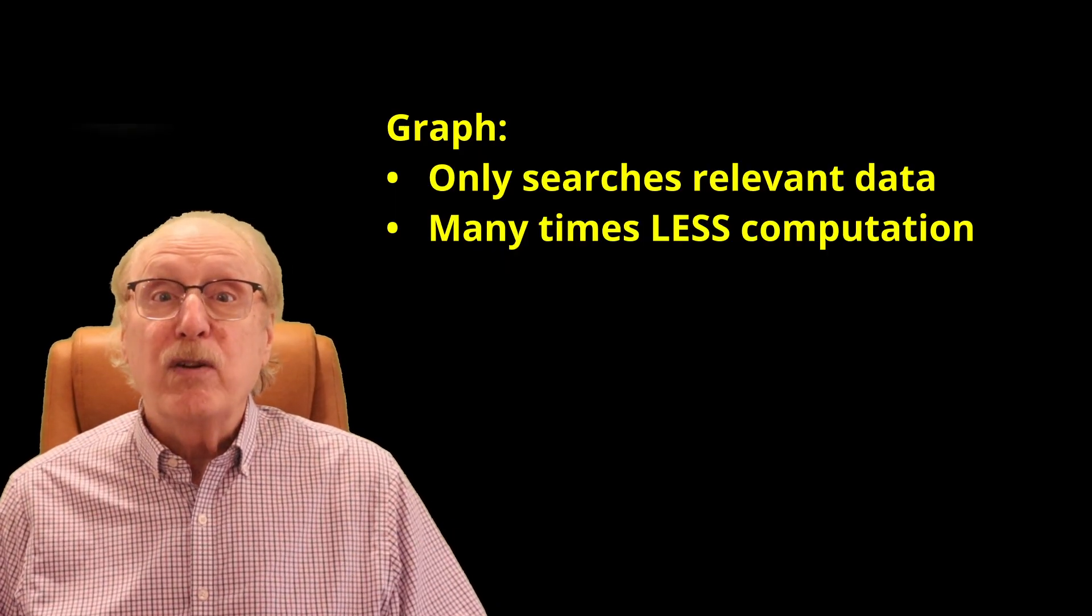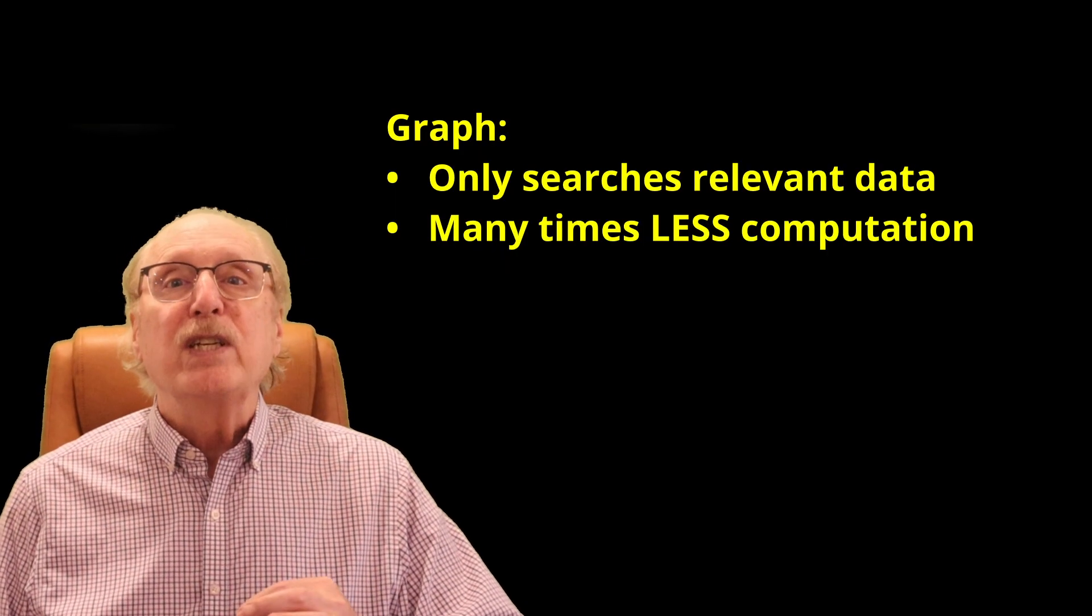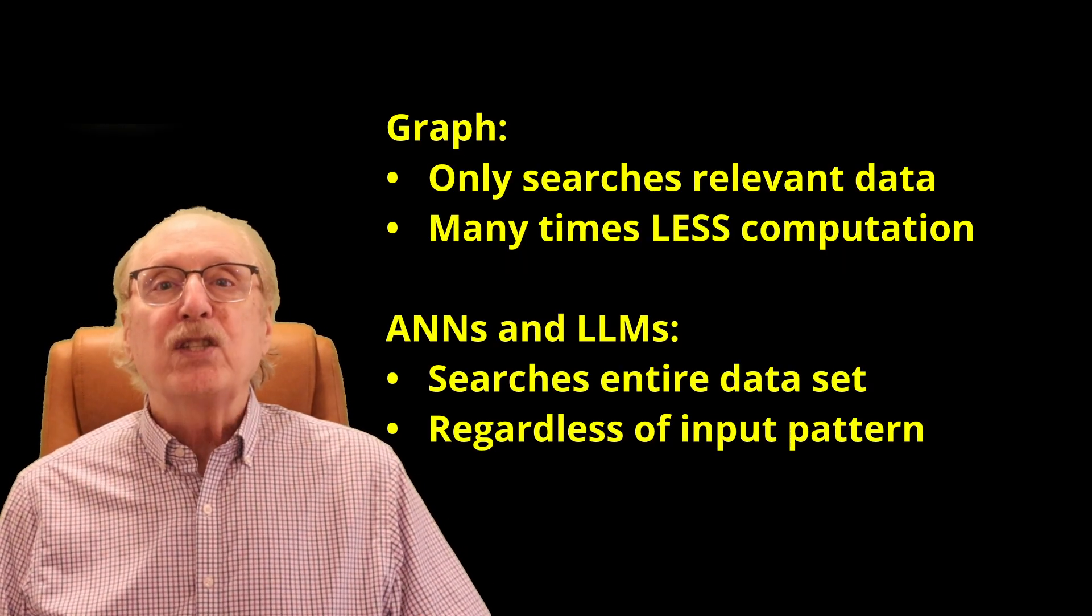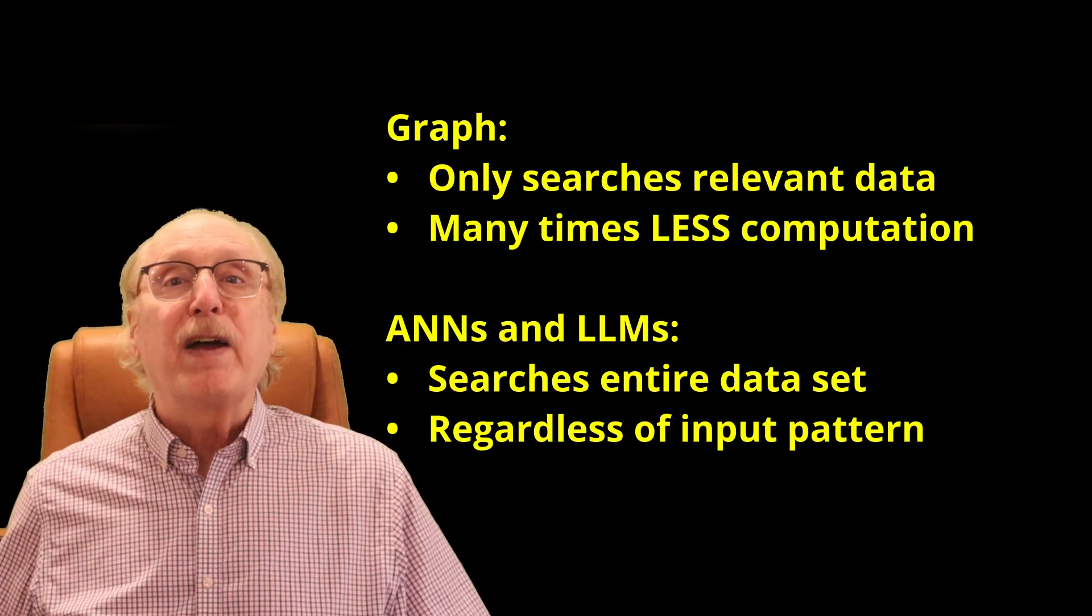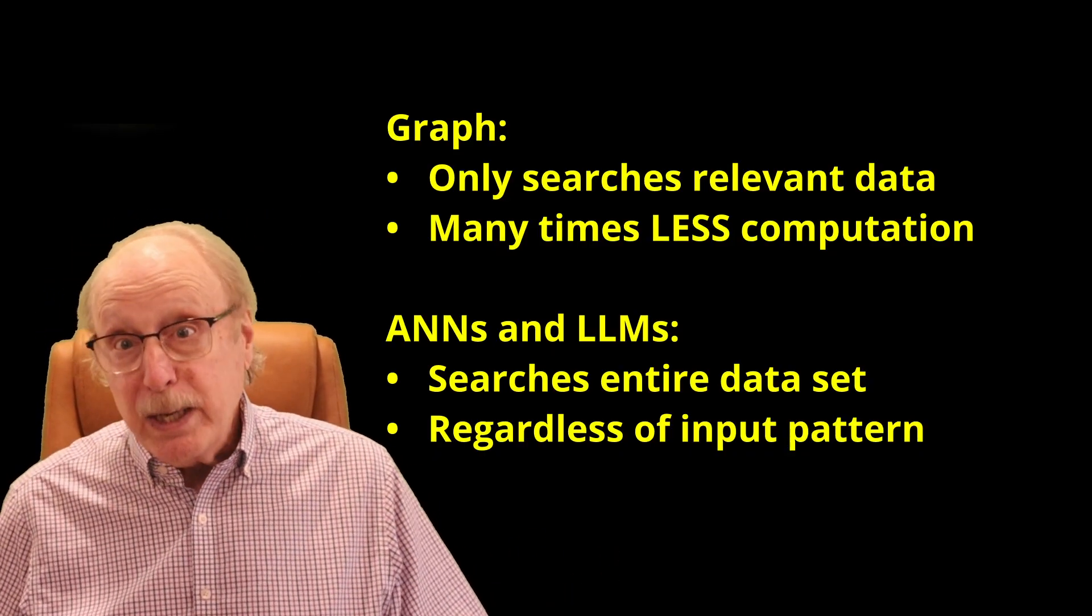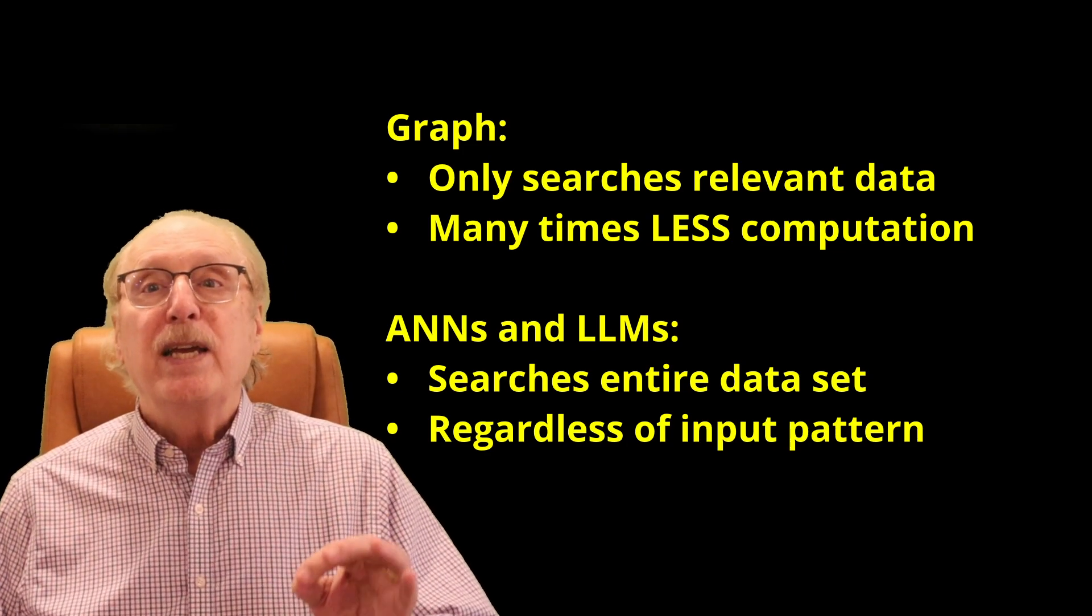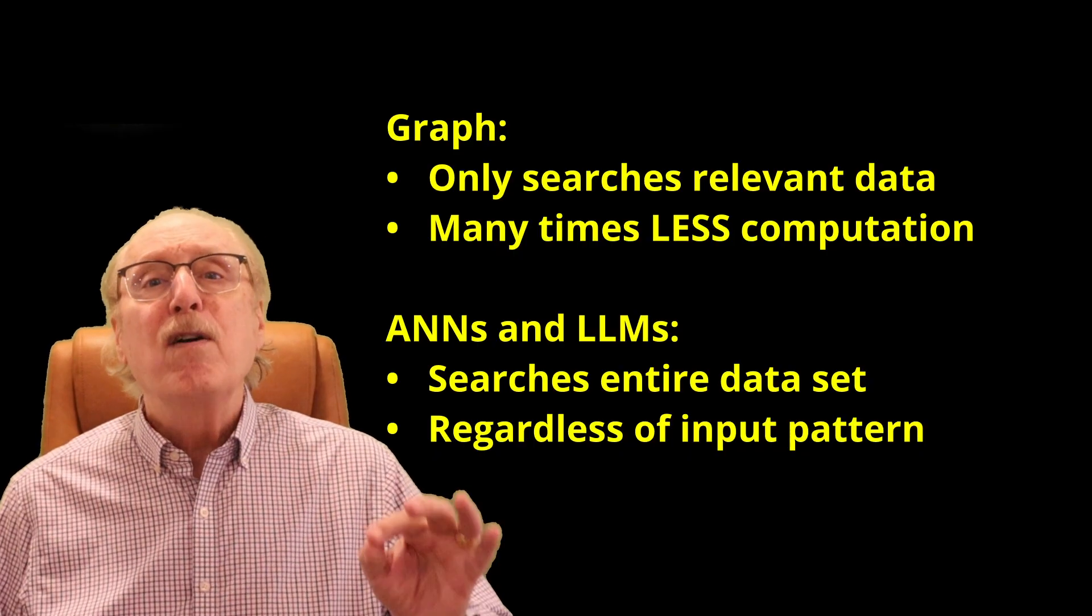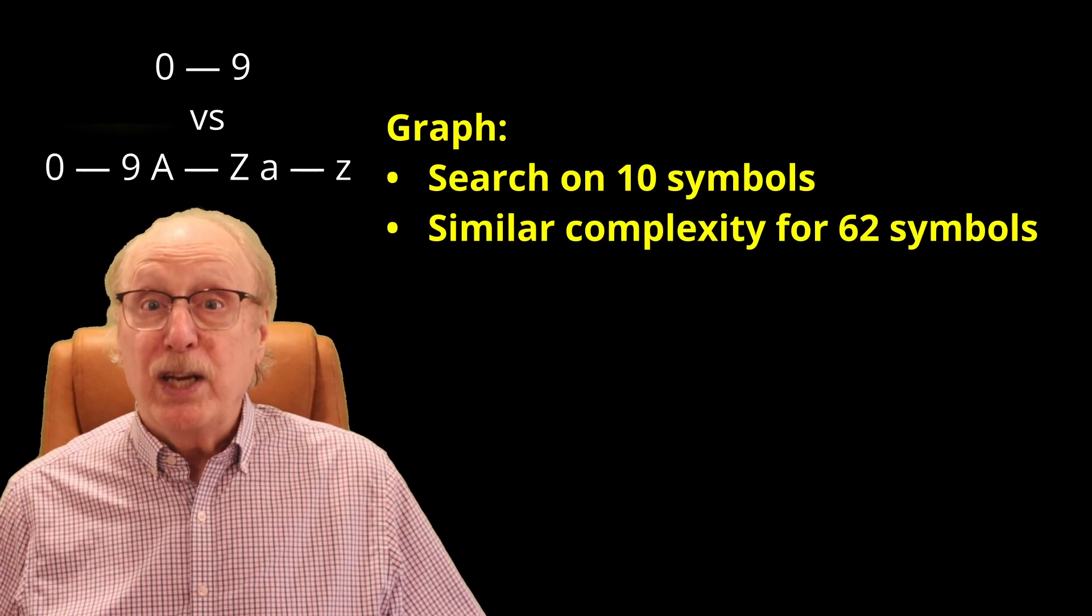In contrast, the graph only searches the significant non-zero inputs, so it is doing orders of magnitude less computation. It's easy to see that the graph search time for what is FIDO is unaffected by the amount of information the graph might contain about other animals or even European history. ANNs and LLMs don't achieve this efficiency. In effect, they compute the likelihoods of their entire content base for every search.